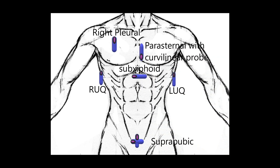Look at this illustration showing standard views of eFAST. Bilateral anterior hemithoraces are also included. Probe marker is pointing towards the patient's right in transverse views, and towards the patient's head in sagittal views.